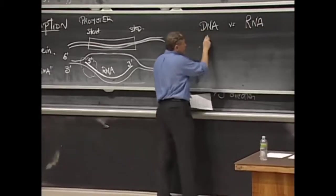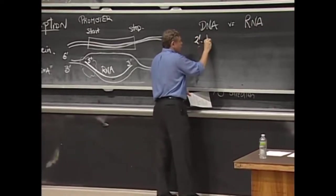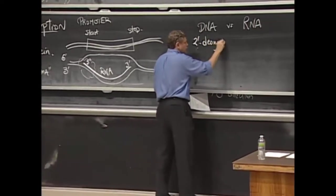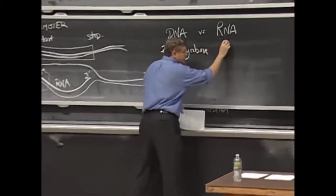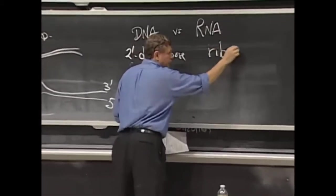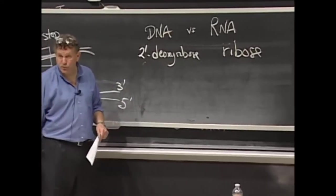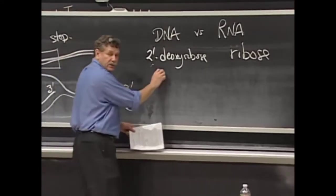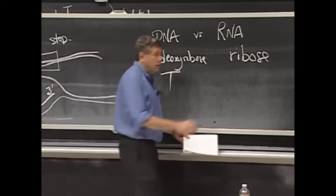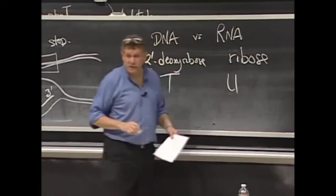Two differences. One, this is two prime deoxyribose. This is ribose. It's not two prime deoxy. It's truly ribose. The other difference, where DNA has T, RNA has U, uracil.